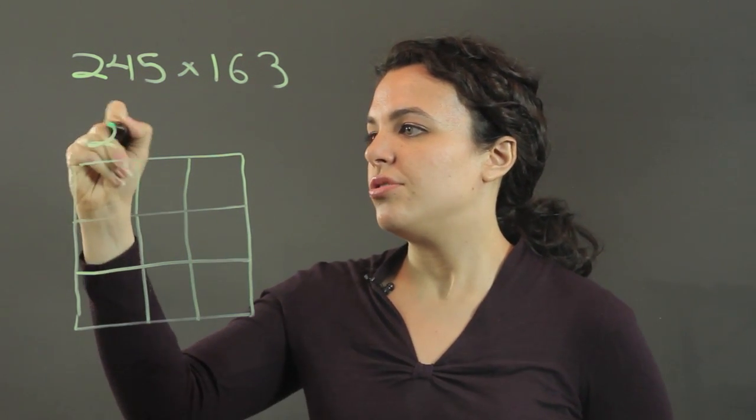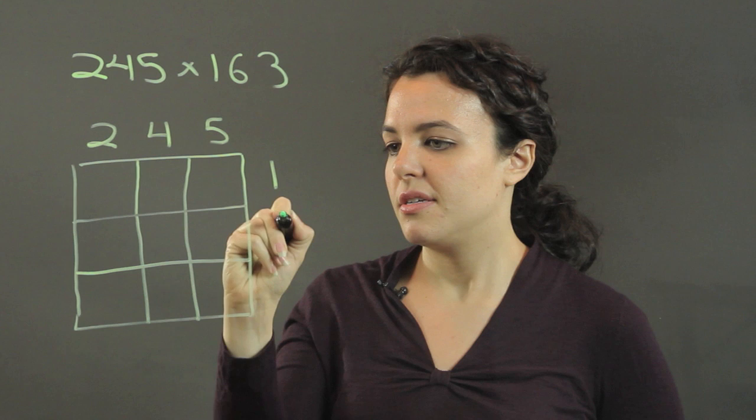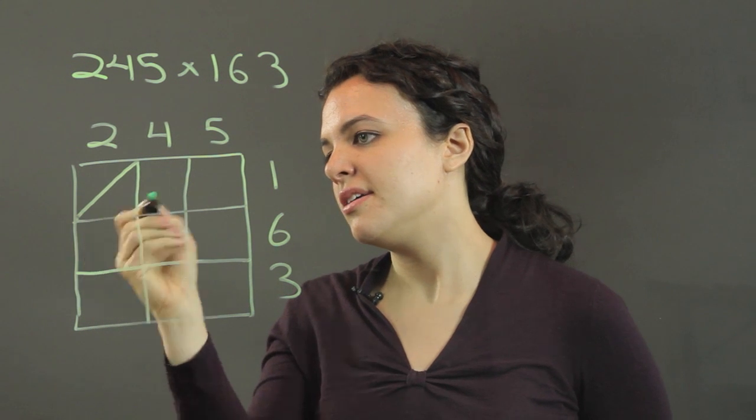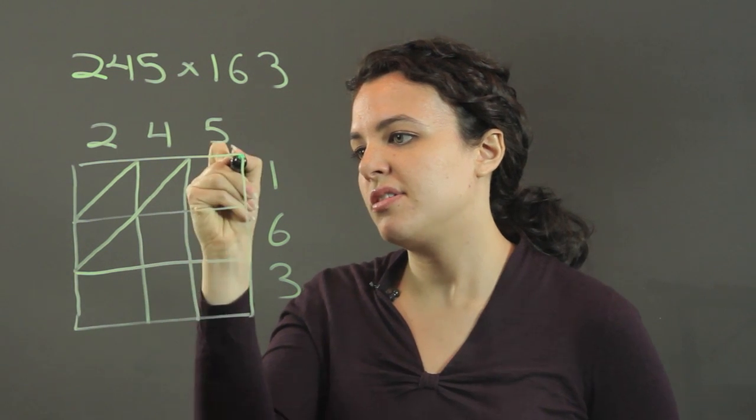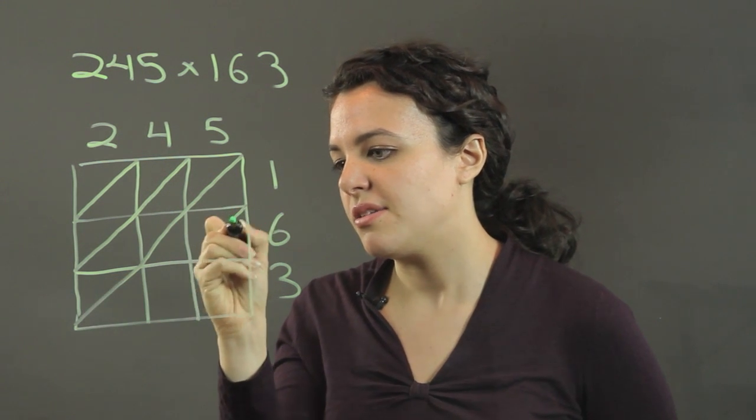And I'm going to write 245 at the top, and then 163. And then you divide these boxes by a diagonal. Now you see the lattice forming, hence the name lattice method.